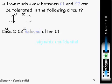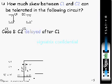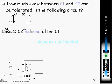We are going to discuss how much skew between C1 and C2 can be tolerated in the following circuit. Here we have two flip-flops connected, both having clocks C1 and C2. If C2 is delayed after C1, look at clock one and clock two — both are positive edge-triggered flip-flops. Between these two clocks we are having some delay.